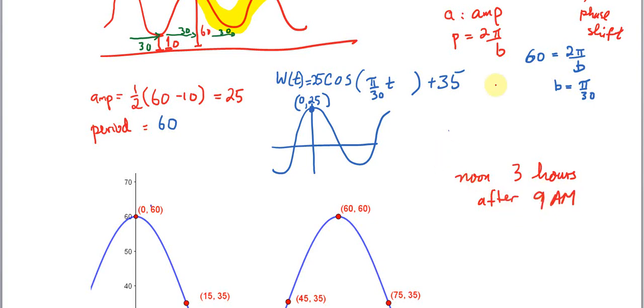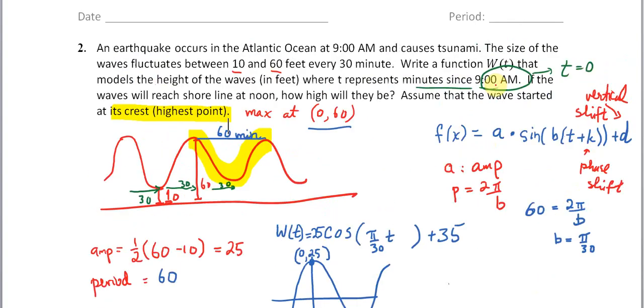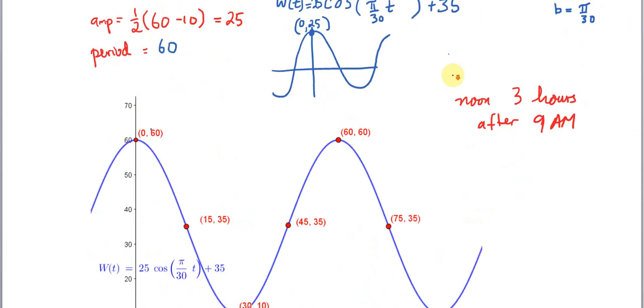But remember that t here is measured in minutes. t represents minutes. So 3 hours after 9 a.m. is 3 times 60 or that's 180 minutes. So we want to find the height of the wave at 180.